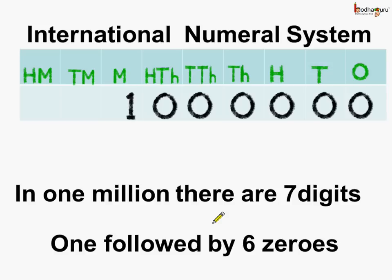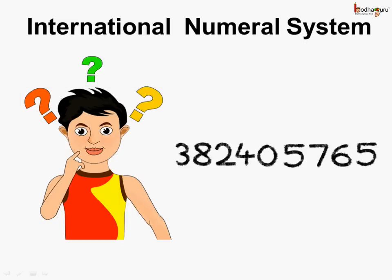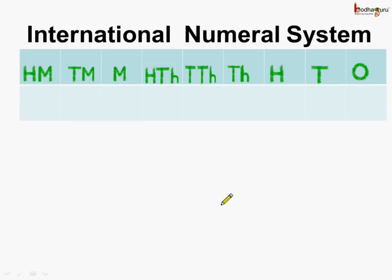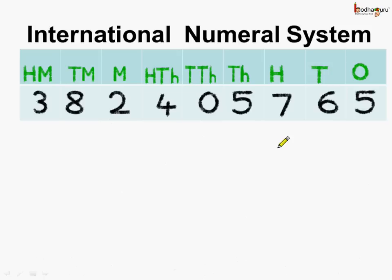Now here is a huge number. Can we read it according to the international numeral system? Let us try. We will place this number under the place value chart. There are five ones, six tens, seven hundreds, five thousands, zero ten thousands, four hundred thousands, two millions, eight ten millions, and three hundred millions. And how do we read it?